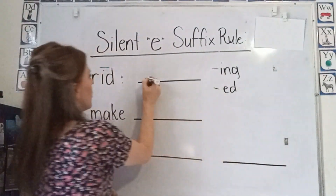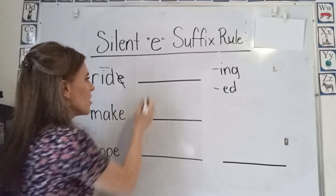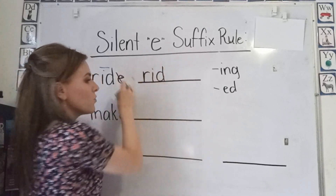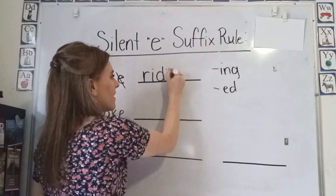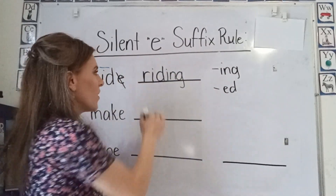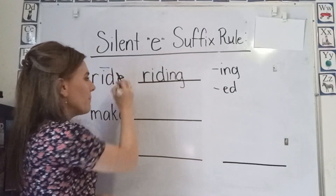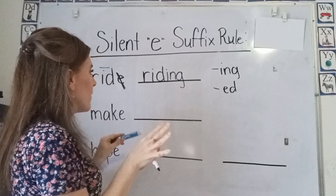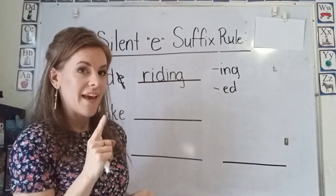So let's do that. Here we have our silent e, so we are going to drop it and add our suffix to the end of it. Riding. We drop the e — the silent e, we get rid of it — and then add our suffix that begins with a vowel.